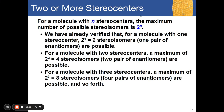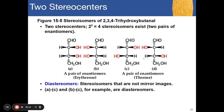For a molecule with N stereocenters, the maximum number of possible stereoisomers is 2^N. If there is one stereocenter, 2^1 = 2 possible stereoisomers. If there are two stereocenters, 2^2 = 4. If three, 2^3 = 8. This formula will be especially helpful in biochemistry when analyzing complex molecules.